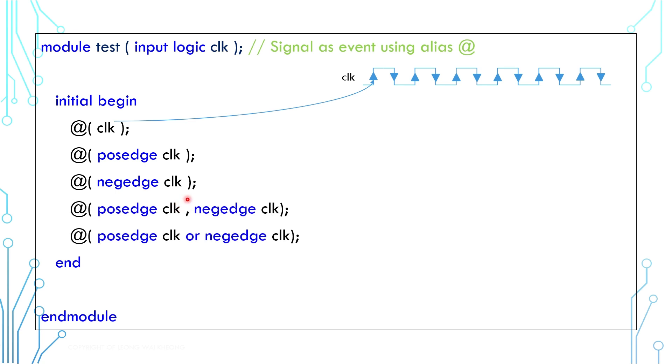We can also use comma or the keyword OR to combine several events. And the several events can come from different signals, for example clock and reset.